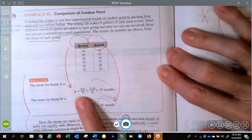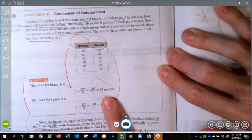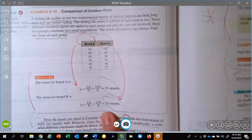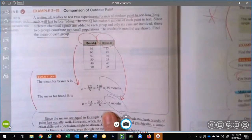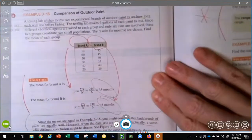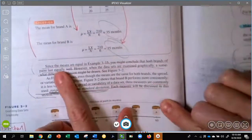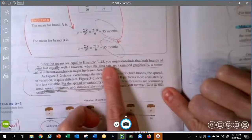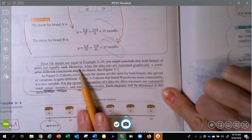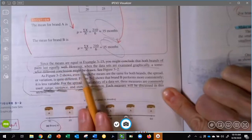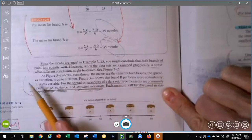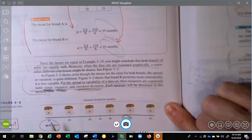And then it wants to know the mean of each. So the mean of brand A comes up with 35 months. It does the mean of brand B and it comes up with 35 months. So we just did a measure of central tendency. And wow, they look the same. However, since the means are equal, you might conclude that both brands of paint last equally well. However, when the data sets are examined graphically, a somewhat different conclusion might be drawn.